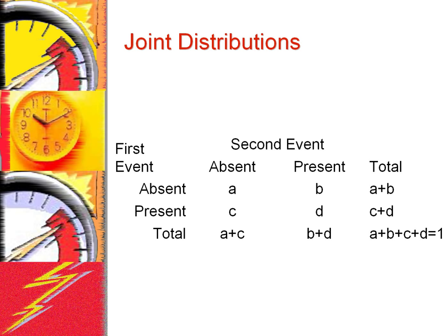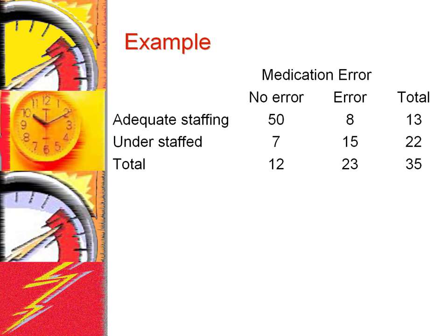The table shows a joint distribution of two events. The constants A, B, C, and D show how many combinations of the two events were observed. For example, A shows how many times the first and second events are both absent, and D shows how many times both events are present. The data in the table have been standardized so that A plus B plus C plus D equals 1. If the data is not in standard form, dividing by the sum of A plus B plus C plus D would accomplish the same goal.